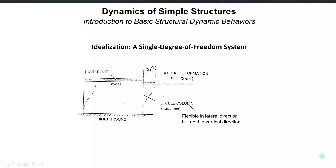Let's continue on where we left off. Here we have a single degree of freedom system. In this structure, the structure is assumed to move only in one direction — the lateral direction. The vertical component or the vertical supports are infinitely rigid, so it cannot move in the y direction, and there is no movement in the z direction — only on the horizontal or lateral direction.